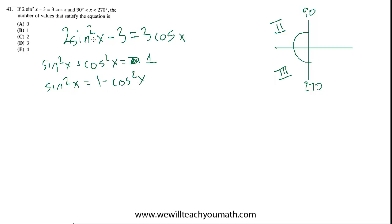And then we can substitute that in for sine squared x. So we'll get 2 times 1 minus cos squared x minus 3 equals 3 cos x. And then we can distribute and say 2 minus 2 cos squared x minus 3 equals 3 cos x.